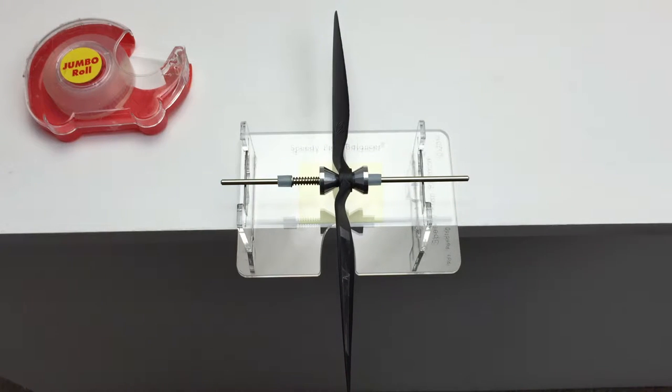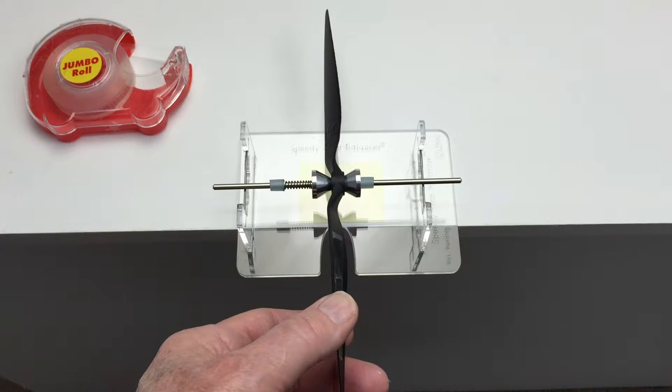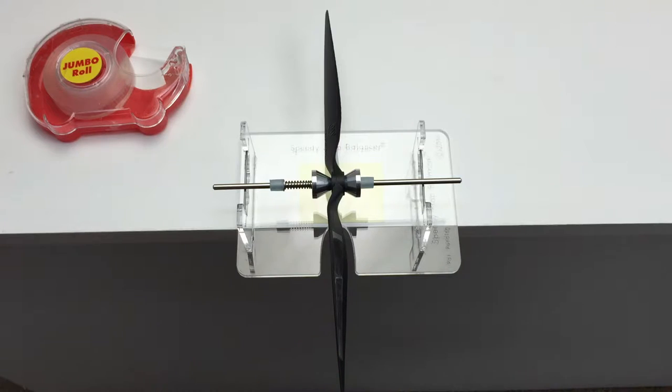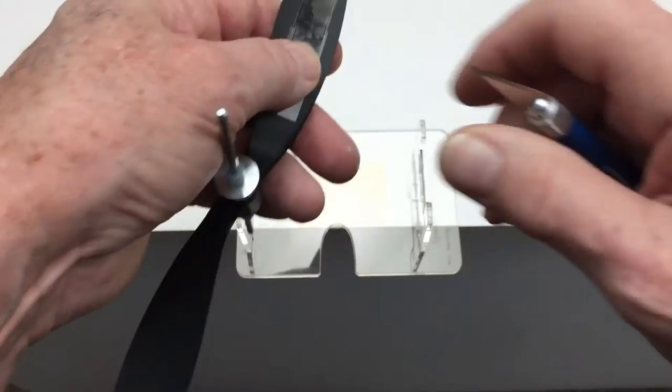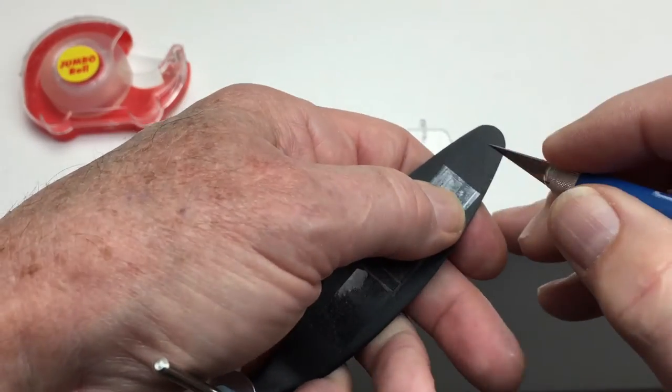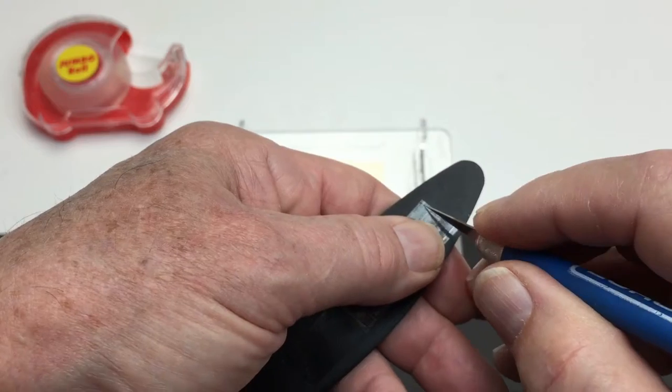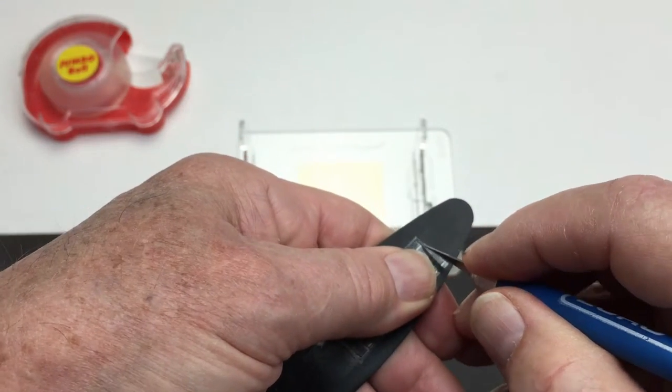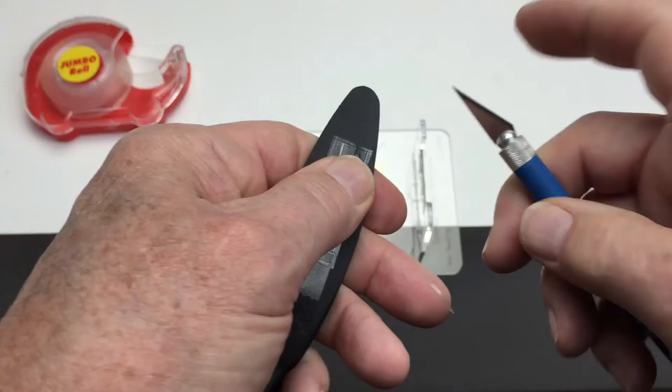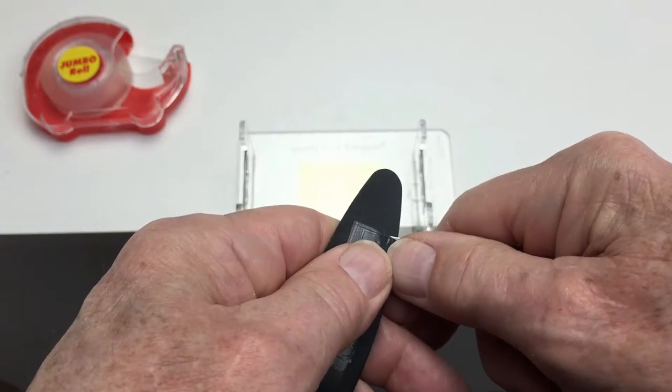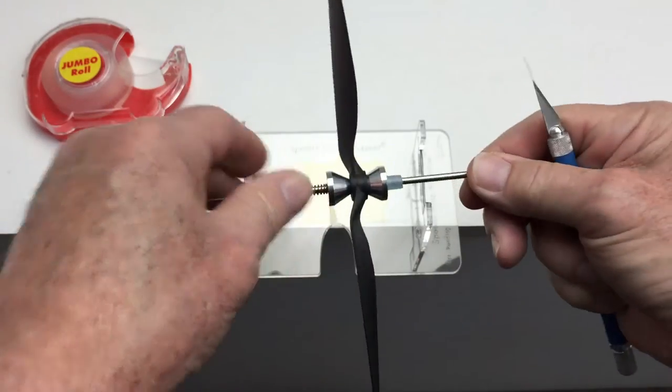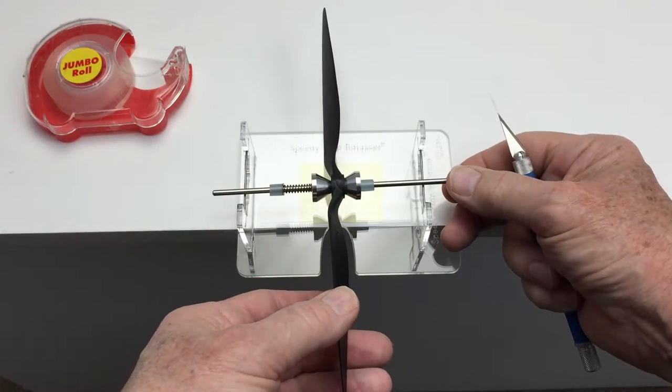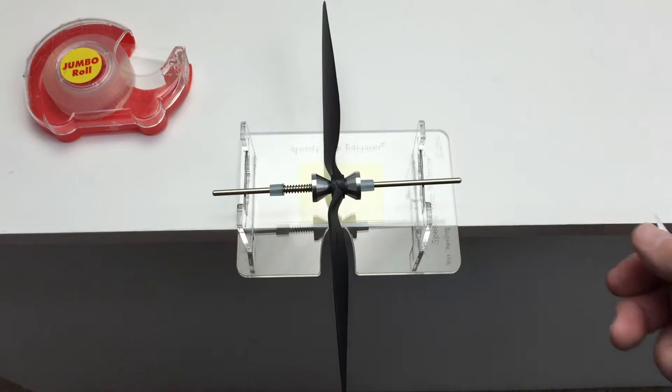Here you go, that's about as balanced as you can get a prop. Now that particular prop was a little bit on the messed up side, but you can get it. Some props balance quicker than that, but sometimes you have to go through this process to get it just right. There you go.